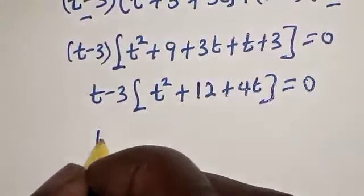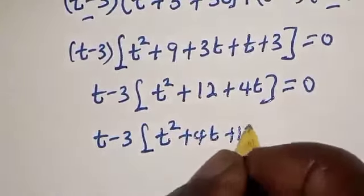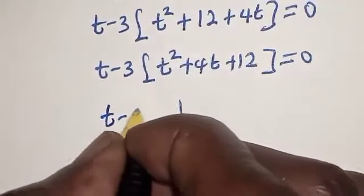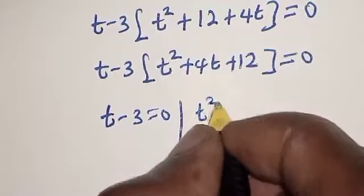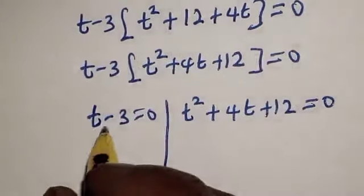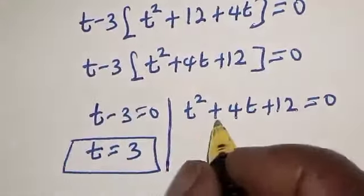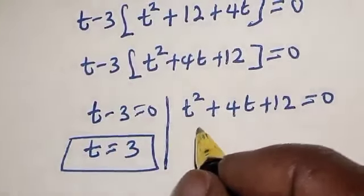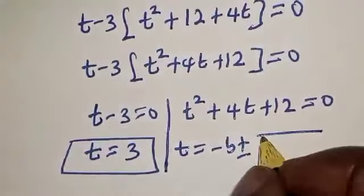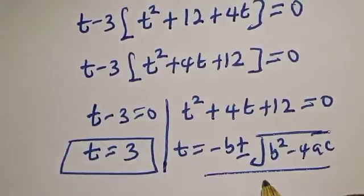Now let's rearrange: t minus 3 bracket t squared plus 4t plus 12 is equal to 0. There are two cases here. Either t minus 3 is equal to 0, or t squared plus 4t plus 12 is equal to 0. From the first case, t is equal to 3.